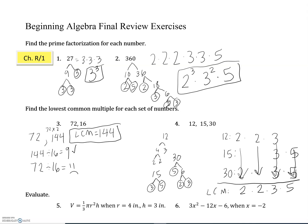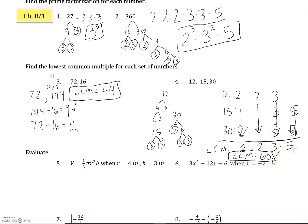So the lowest common multiple of 12, 15, and 30 is 60. And we could have done it the way we did number three where we just start listing out multiples of the numbers and find one they have in common, but this is another way to do it.